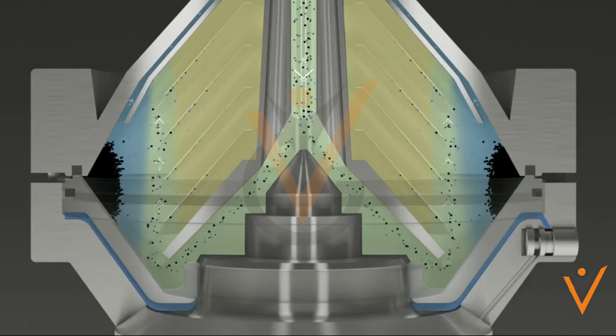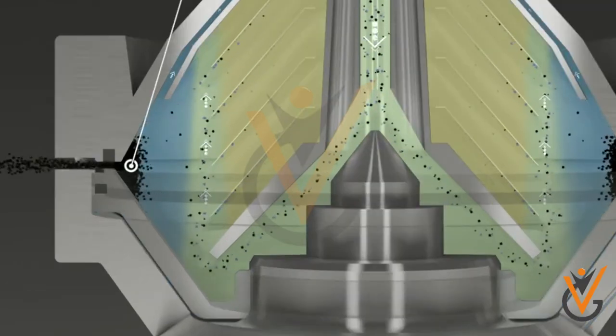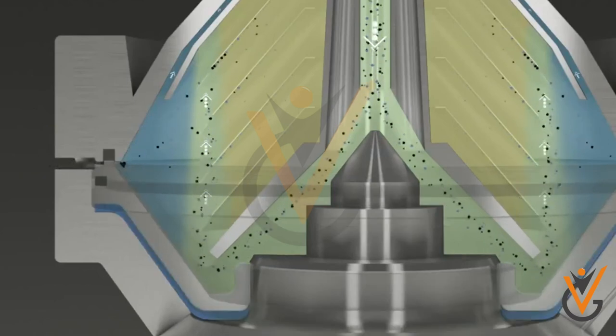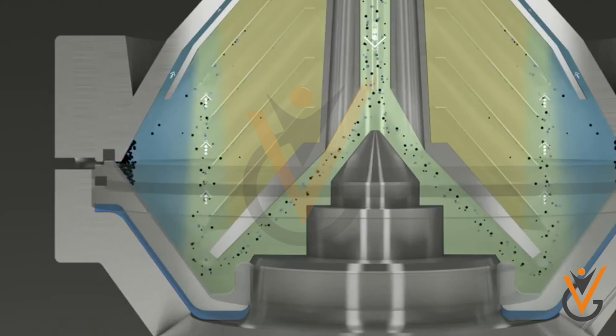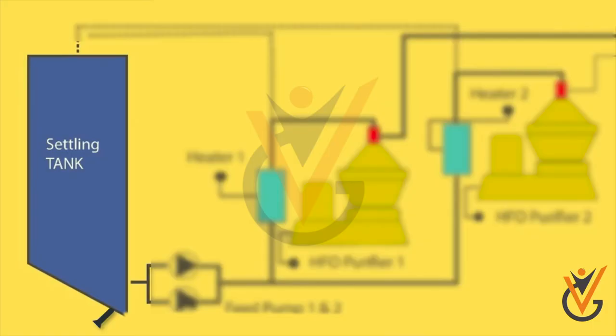In a purifier, before introducing the oil, water sealing is established so that oil fill should not flow out through the heavy liquid outlet. In clarifier, there is no heavy liquid outlet for discharging separated water. Hence water sealing is unnecessary.